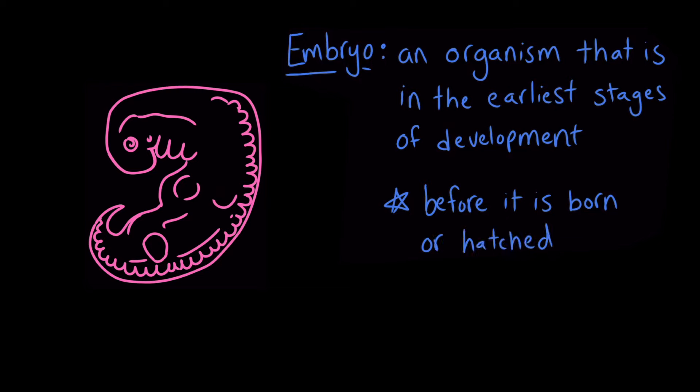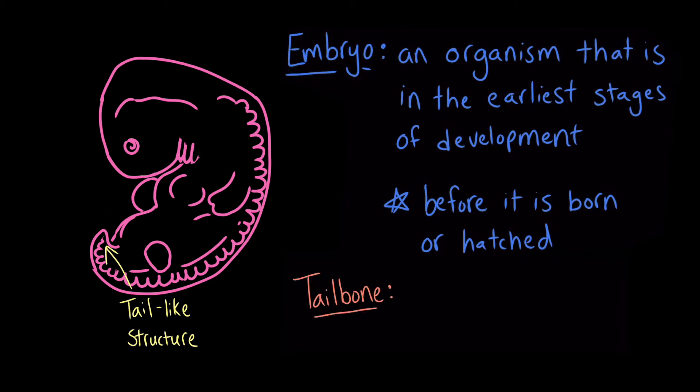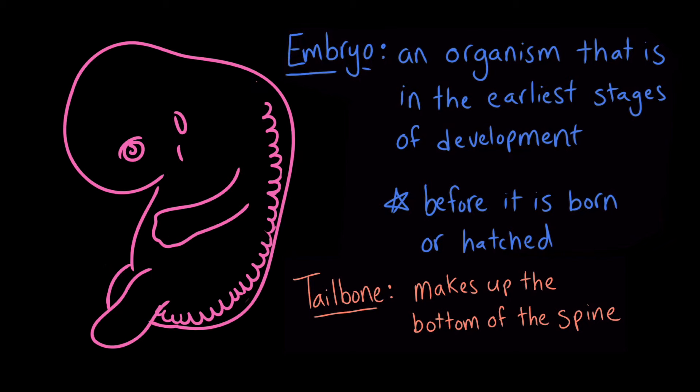Early on in the growth of a human embryo, the embryo has a tail-like structure. As time goes on, the embryo grows, and eventually, the cells that made up that tail structure shift and form the tailbone, which makes up the bottom of the spine. By the time the embryo is eight weeks old, the tail is not visible at all.